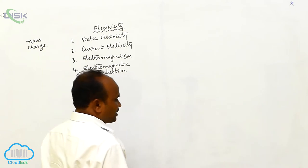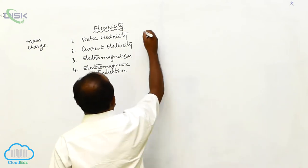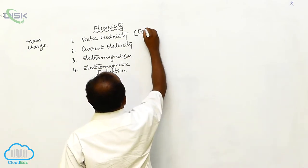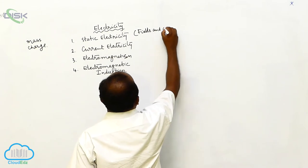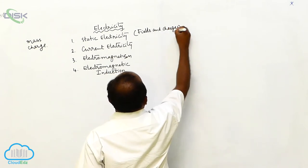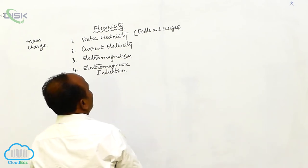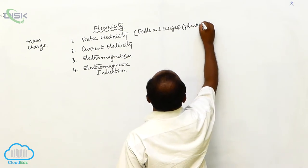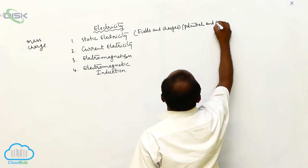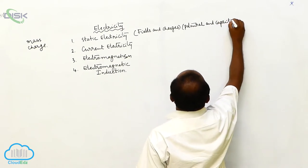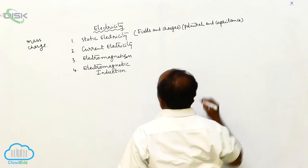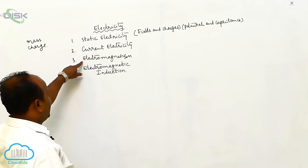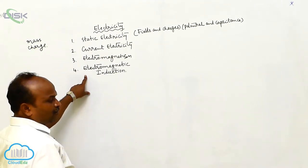According to the intermediate-secondary syllabus, in static electricity we discuss fields and charges, and potential and capacitance. The other chapters are current electricity, electromagnetism, and electromagnetic induction.